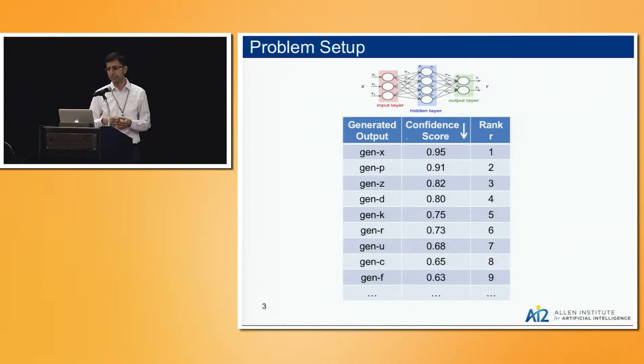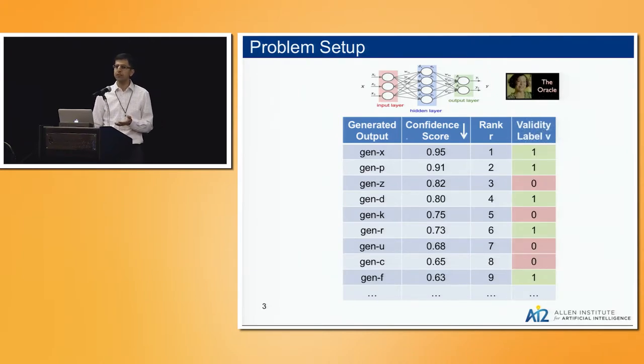We'll look at the confidence that the model assigns to the correctness or validity of that output. Let's sort it in decreasing order. At the top, we have the most confident output, and as we go down, we get this rank list of less and less confident but still generated output. We have this very long list.